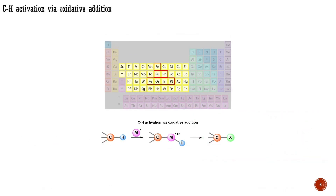Now let's delve into specific examples, starting with CH activation through the oxidative addition of the metal to the CH bond. This mechanism is typical for late transition metals in their low oxidation states. For instance, if you encounter a CH transformation catalyzed by iridium-1 or rhodium-1 complexes, it's likely that the reaction proceeds via the oxidative addition of the catalyst to the CH bond, generating iridium-3 or rhodium-3 intermediates. These intermediates, through subsequent elementary reactions, will lead to the formation of the product resulting from CH activation.